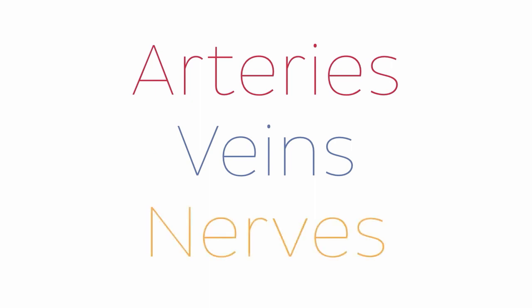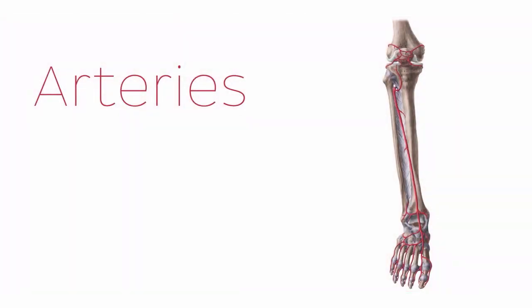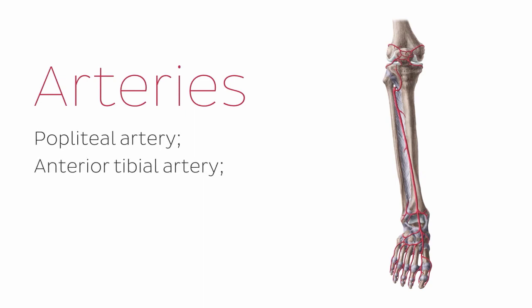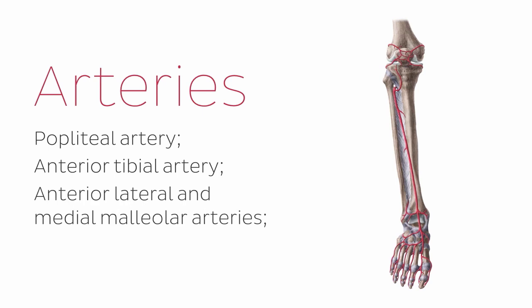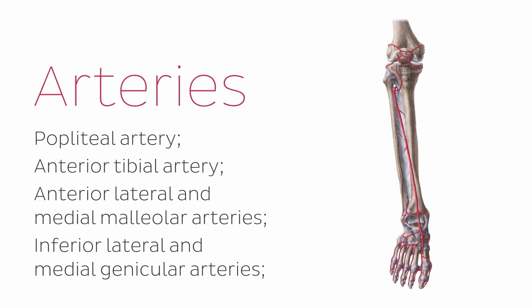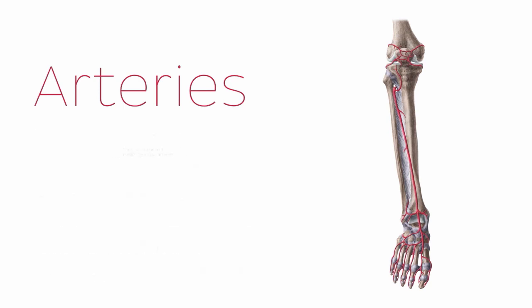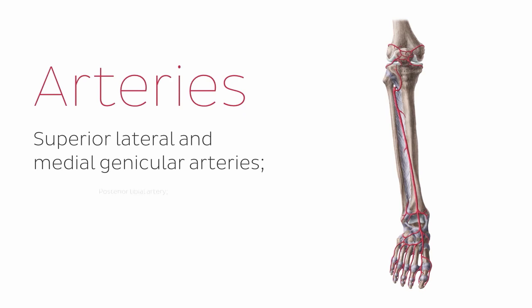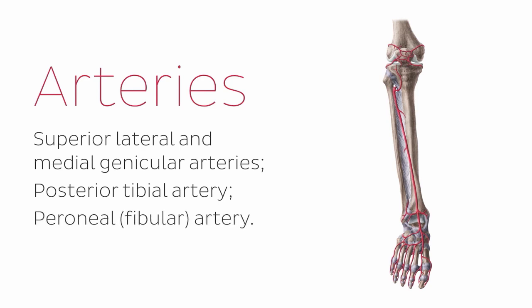I'm going to be talking about the different arteries, veins, and nerves that we find on our lower leg — below the knee and all the way to your foot. The arteries we'll be covering include the popliteal artery, the anterior tibial, the anterior lateral and medial malleolar arteries, the inferior lateral and medial genicular arteries, the superior lateral and medial genicular arteries, the posterior tibial artery, and the peroneal artery, also known as the fibular artery.